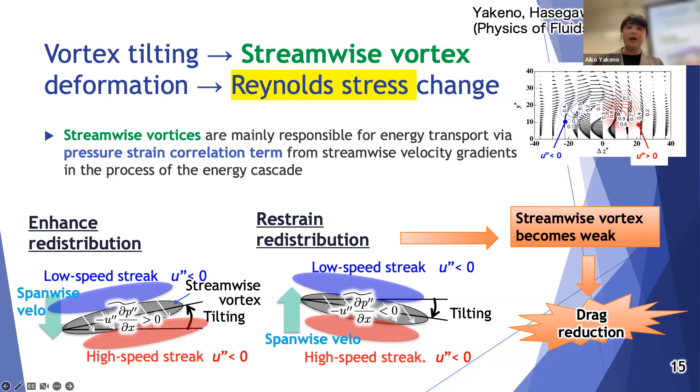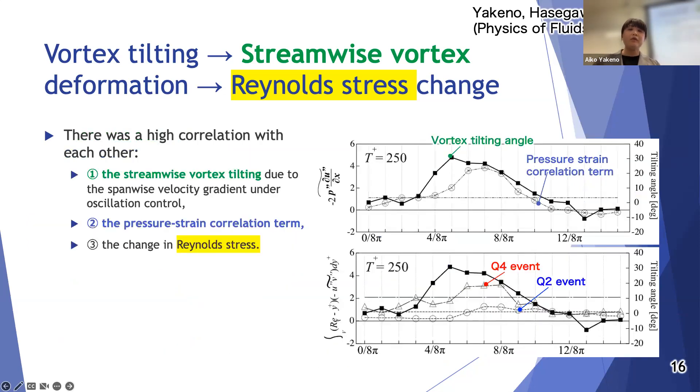That restrains energy redistribution. Therefore I explain the streamwise vortex becomes weak and the reproduction occurs at the opposite direction of the Stokes layer shear. I compare the relationship between these three values: the first is the streamwise vortex tilting angle, the second is the pressure strain correlation term in the conditional sampling, the third is the change in the Reynolds shear stress at each phase. The figure shows the values in phase. There was a high correlation with each other.